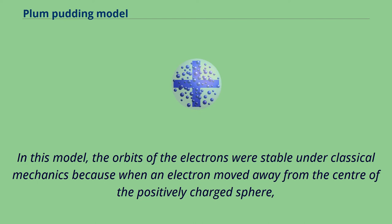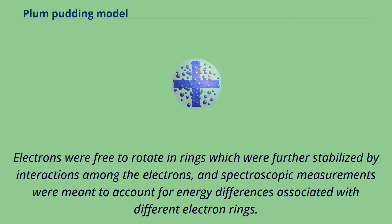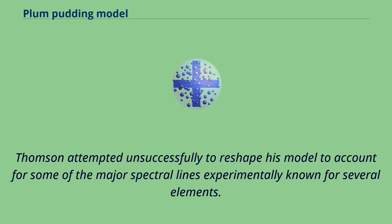In this model, the orbits of the electrons were stable under classical mechanics because when an electron moved away from the center of the positively charged sphere, it was subjected to a greater net positive inward force, as there was more positive charge inside its orbit. Electrons were free to rotate in rings, further stabilized by interactions among the electrons, and spectroscopic measurements were meant to account for energy differences associated with different electron rings. Thomson attempted unsuccessfully to reshape his model to account for some of the major spectral lines experimentally known for several elements.